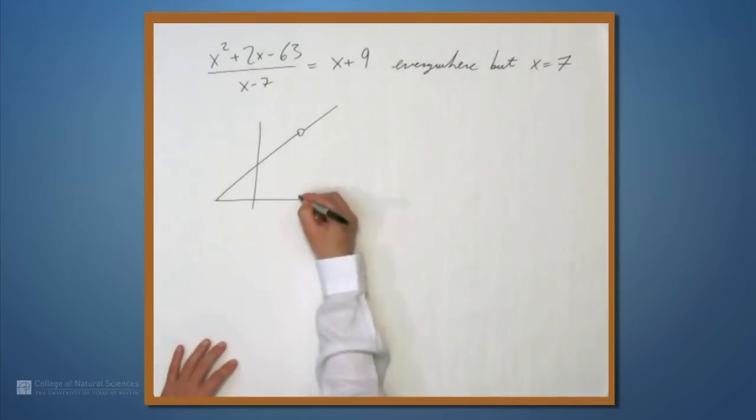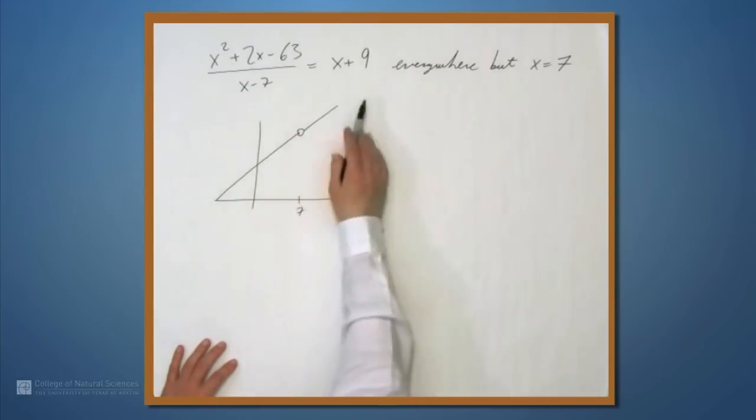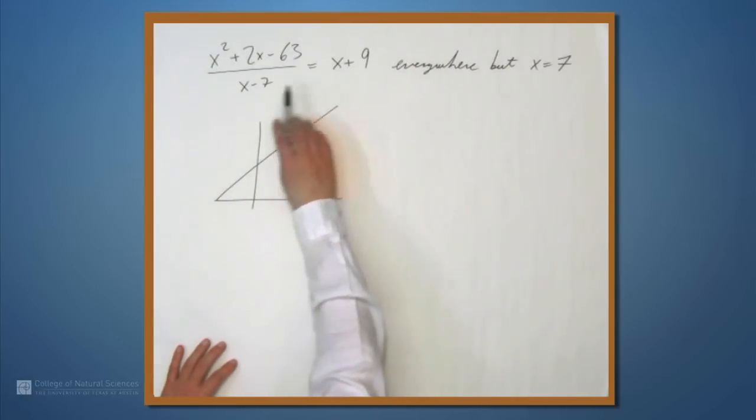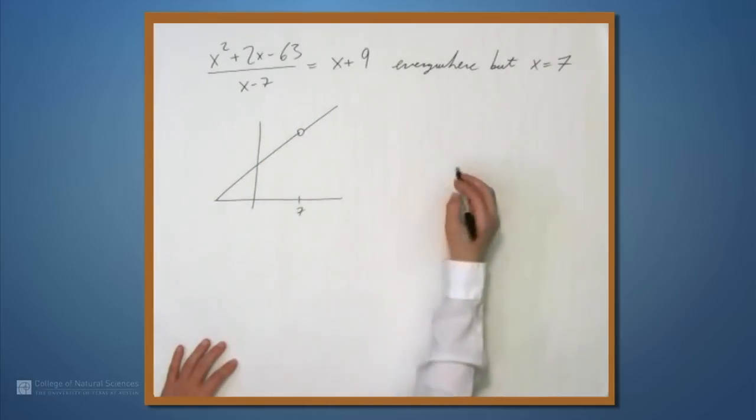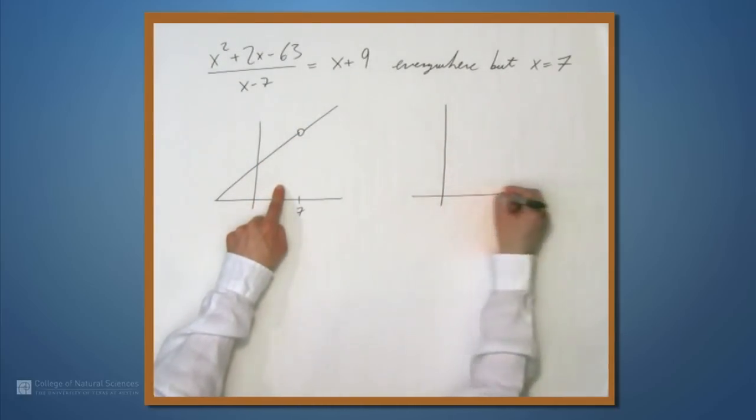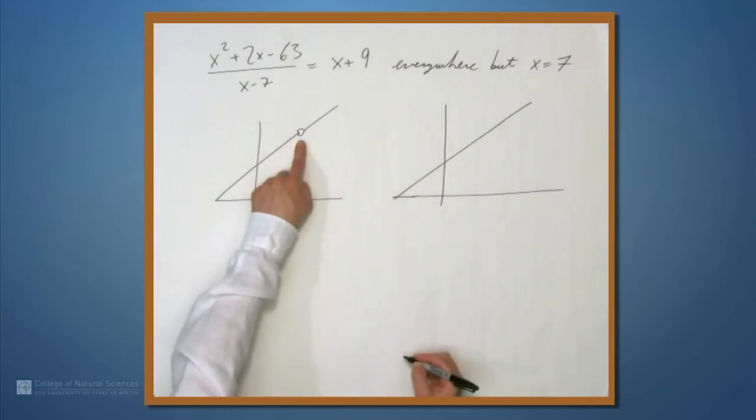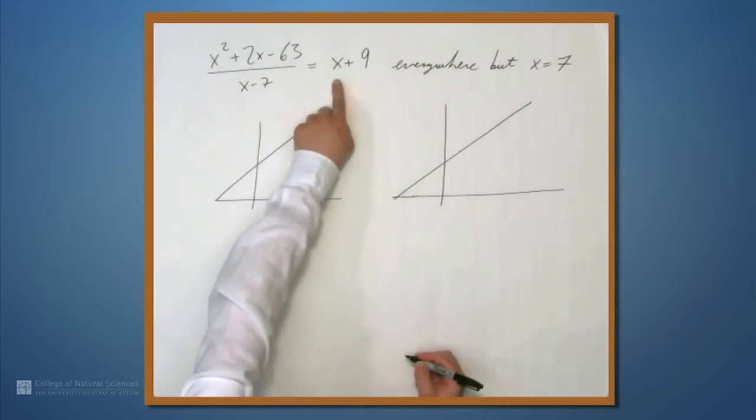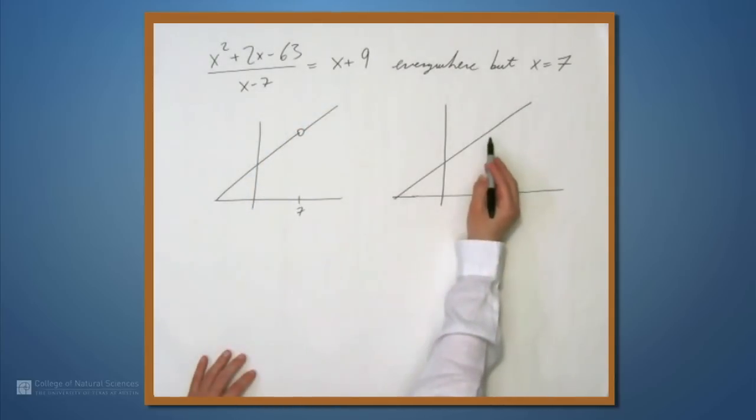So when we went through this process of algebraic manipulation to cancel the x minus 7, we replaced this picture with this picture. We just filled in this hole with its natural value. The thing that this should be is 16. And so that's why we get this x plus 9. That's why we can simply plug 7 in to the formula to find the limit.